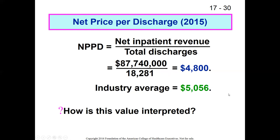The industry average is $5,056, so our figure seems a little low — higher is obviously better. But here's a point worth emphasizing: you have to find the right industry average. If this is a facility that sees a lot of lower intensity cases, then having a lower price per discharge would make sense. If it were a teaching hospital or tertiary care organization, you'd expect a higher price per discharge. So you have to be careful when choosing your comparison averages.